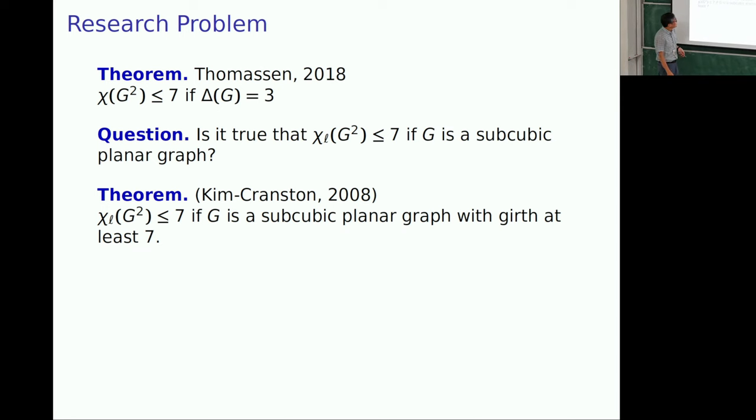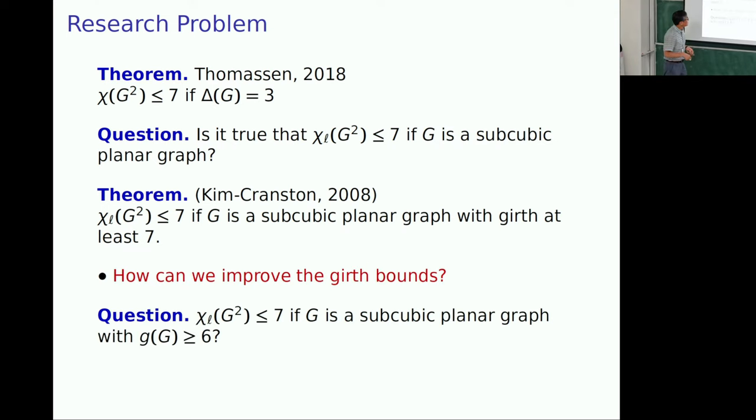So, then, with Dan Cranston, we show that, if subcubic means maximum degree at most three. And, then, if maximum degree at most three, then, girth L is seven. Then, upper bound is seven. Then, let me skip most of it. Then, the natural question is, actually, we have girth restriction, right? We need to upgrade this girth condition. So, after this, we want to ask, how about girth six? Can you say something? But, unfortunately, after this, it was not easy to say something about here.